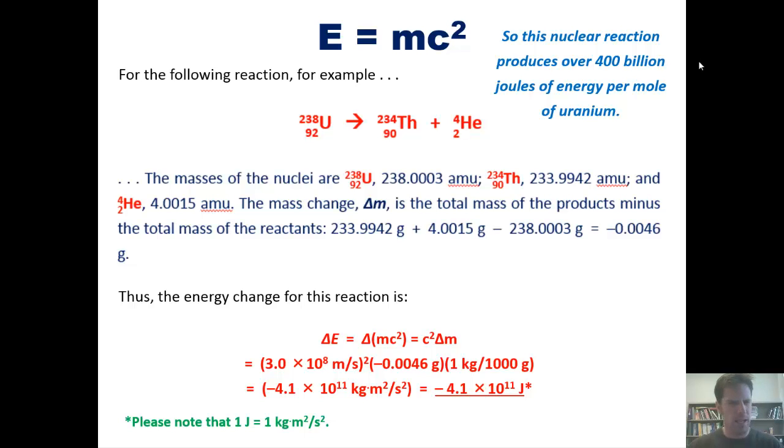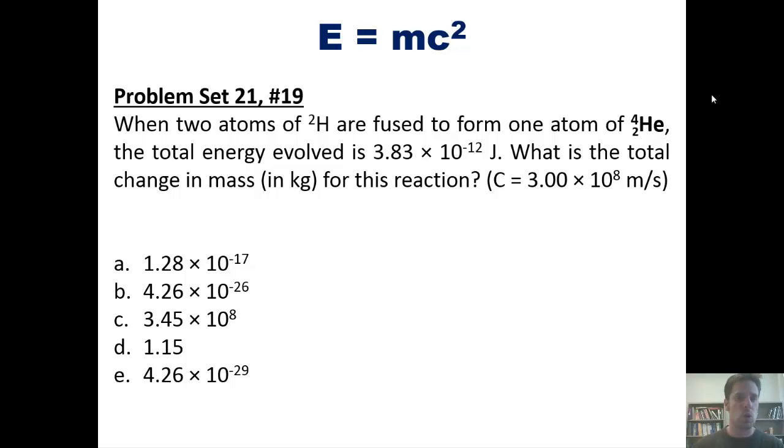Let's go on by looking at a problem. When two atoms of hydrogen-2, formerly called deuterium, are fused to form one atom of helium-4, the total energy evolved is 3.83 times 10 to the negative 12th joules. What is the total change in mass in kilograms for this reaction, keeping in mind that the speed of light is 3 times 10 to the 8th meters per second? I'm not going to show you how to do this, but invite you to use this equation E equals mc squared to see if you can come up with the answer on your own.